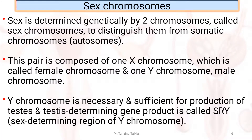Sex is determined genetically by two chromosomes called sex chromosomes, to distinguish them from somatic chromosomes. This pair is composed of one X chromosome, which is called the female chromosome, and a Y chromosome, which is called the male chromosome.